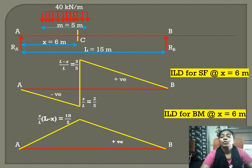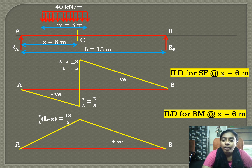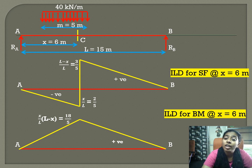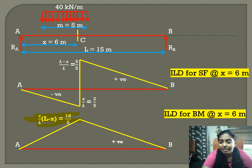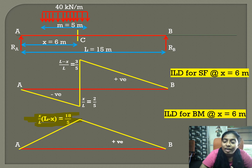This is the influence line diagram for bending moment at the section where x equals 6 meters. The influence line for bending moment has only a positive ordinate, and the ordinate is equal to (x/L) × (L minus x). Substituting x = 6 and L = 15, we get the ordinate equal to 18/15.